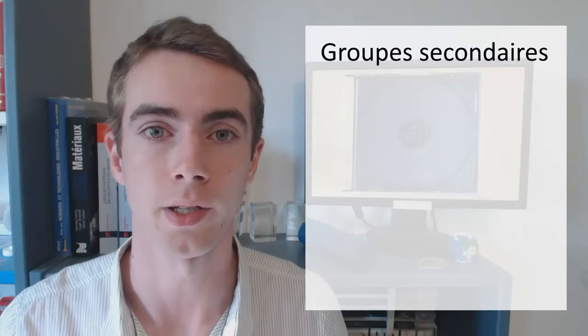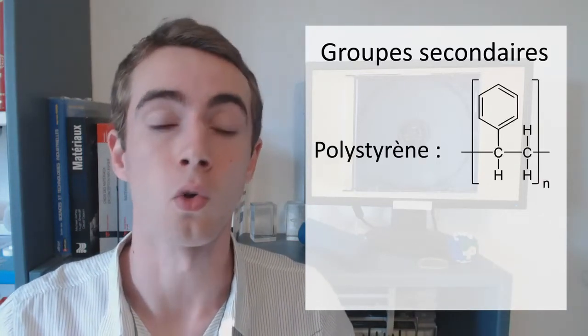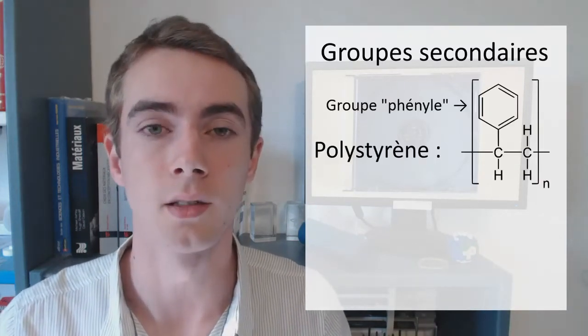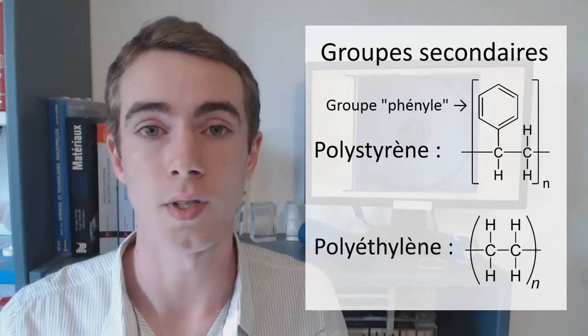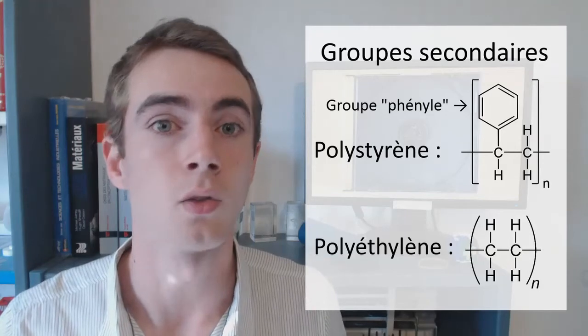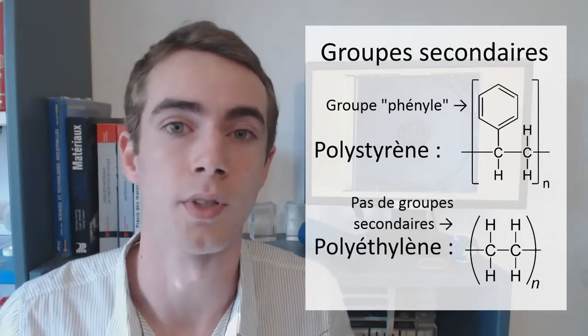Comme je parle du polystyrène, j'en profite pour vous présenter encore un mot de vocabulaire. Les atomes autres que l'hydrogène, ou les groupements d'atomes qui sont fixés sur la chaîne principale mais qui n'en font pas partie, sont appelés des groupes secondaires. Dans le cas du polystyrène, on a sur chaque unité monomère un groupe phényl. Par contre, dans le cas du polyéthylène, il n'y a que des atomes d'hydrogène sur toute la chaîne, donc il n'y a aucun groupe secondaire. C'est pour ça que c'est le plus simple des polymères.